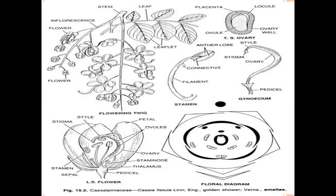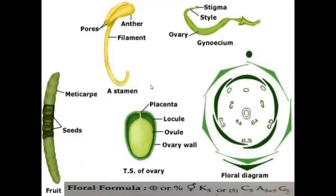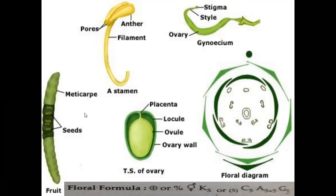The fruit is a legume. In Tamarindus, indehiscent fruits are present — the fruit cannot dehisce longitudinally. In Tyrolobium, samara fruits are present. The seeds are dicotyledonous and non-endospermic.